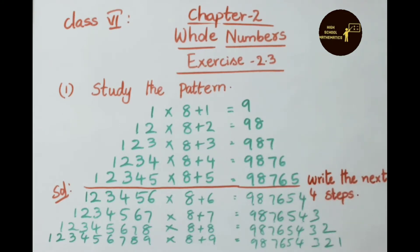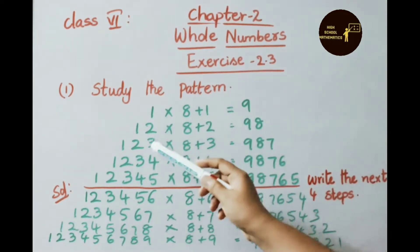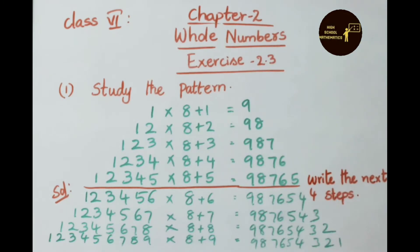So this is our solution. What we observe in this pattern: 1 × 8, that is 8 + 1 = 9, so our answer is 9. See, 12 × 8 = 96, 96 + 2 = 98. Similarly this calculation works, this pattern works.